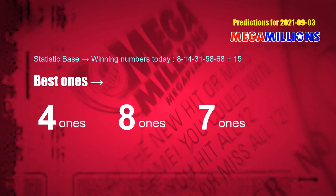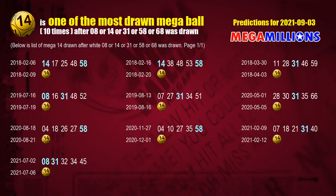According to the statistics above, with white balls 08, 14, 31, 58, 68 drawn today, the frequent following ones are 4-ones, 8-ones, and 7-ones. After getting following ones, we can use following number statistics to find out the following Mega Ball numbers. The first Mega Ball most drawn after 08, 14, 31, 58, or 68 was drawn is Mega Ball 14.